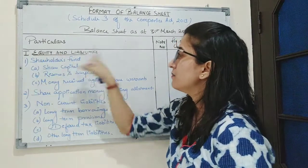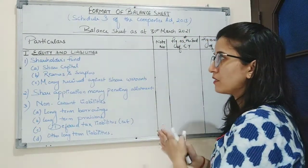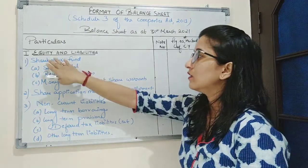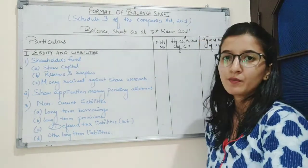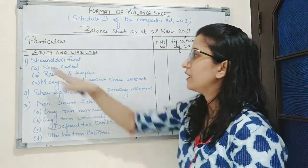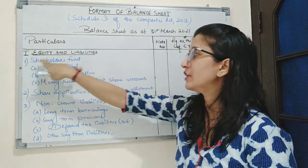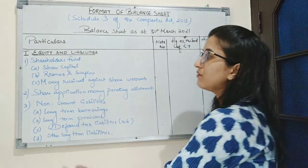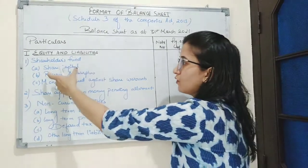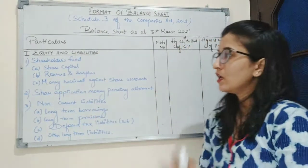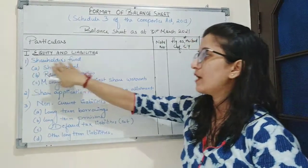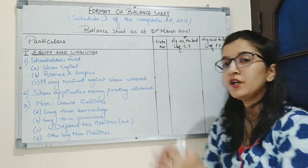Equity and liabilities — this is a balance sheet of a company's form of business. In the previous class, we discussed the balance sheet of a sole proprietorship firm; this is the balance sheet of a company's form of business. That is why under equity and liabilities we have written 'shareholders fund,' whereas previously we wrote 'capital' because that capital was the owner's equity.